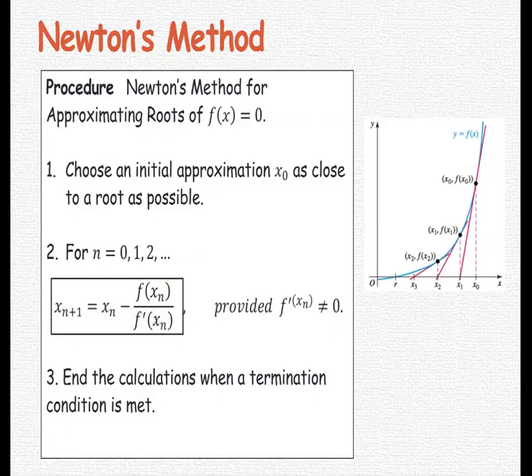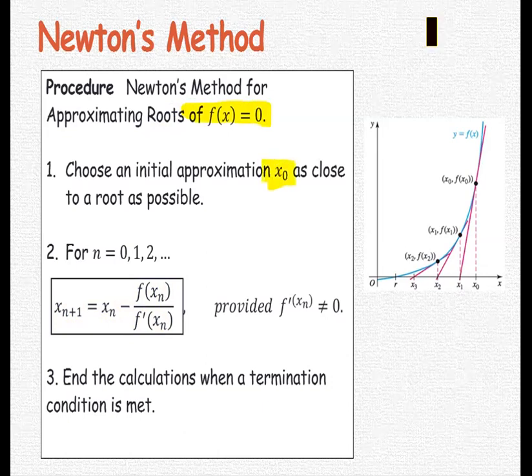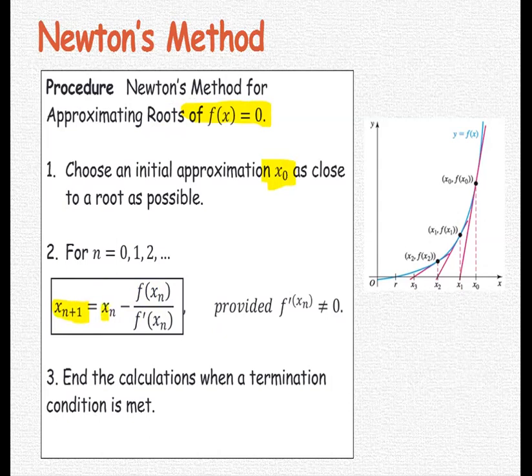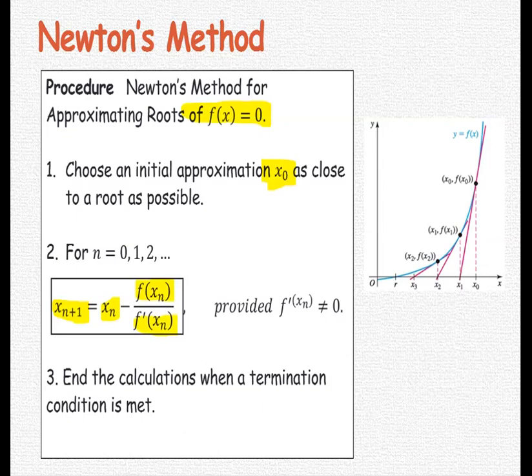Newton's method to approximate the root of f(x) = 0: First, choose an initial approximation x₀ as close to the root as possible. Next, use the formula xₙ₊₁ = xₙ - f(xₙ)/f'(xₙ), making sure f'(xₙ) ≠ 0. Third, end the calculations when the termination condition is met.